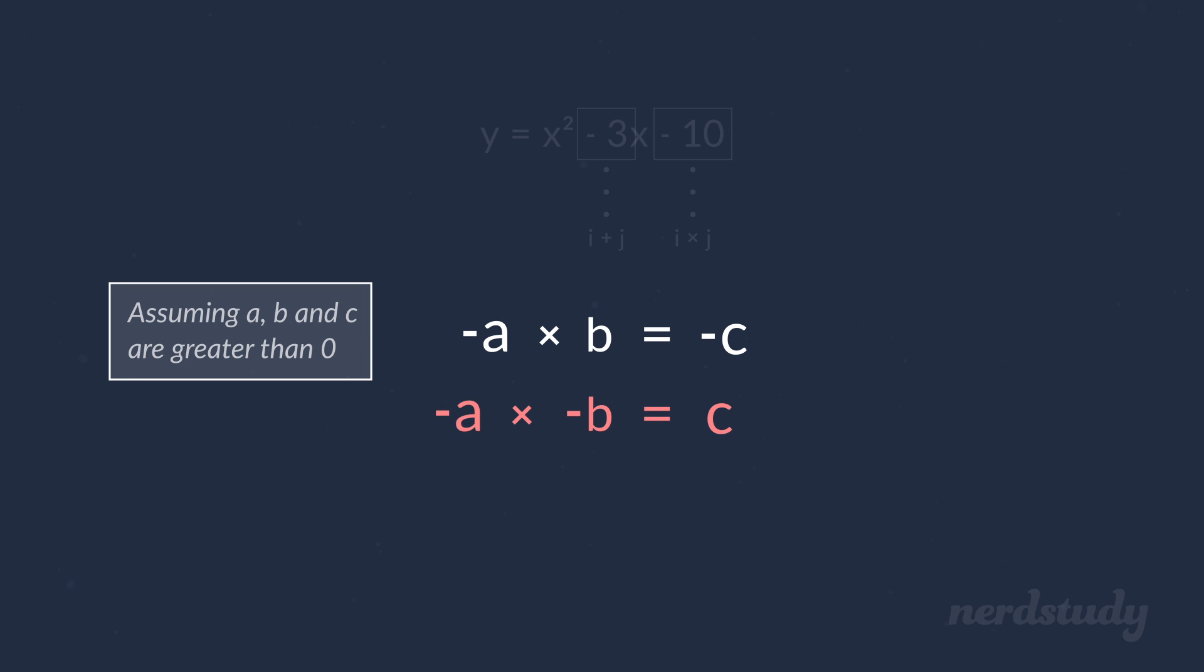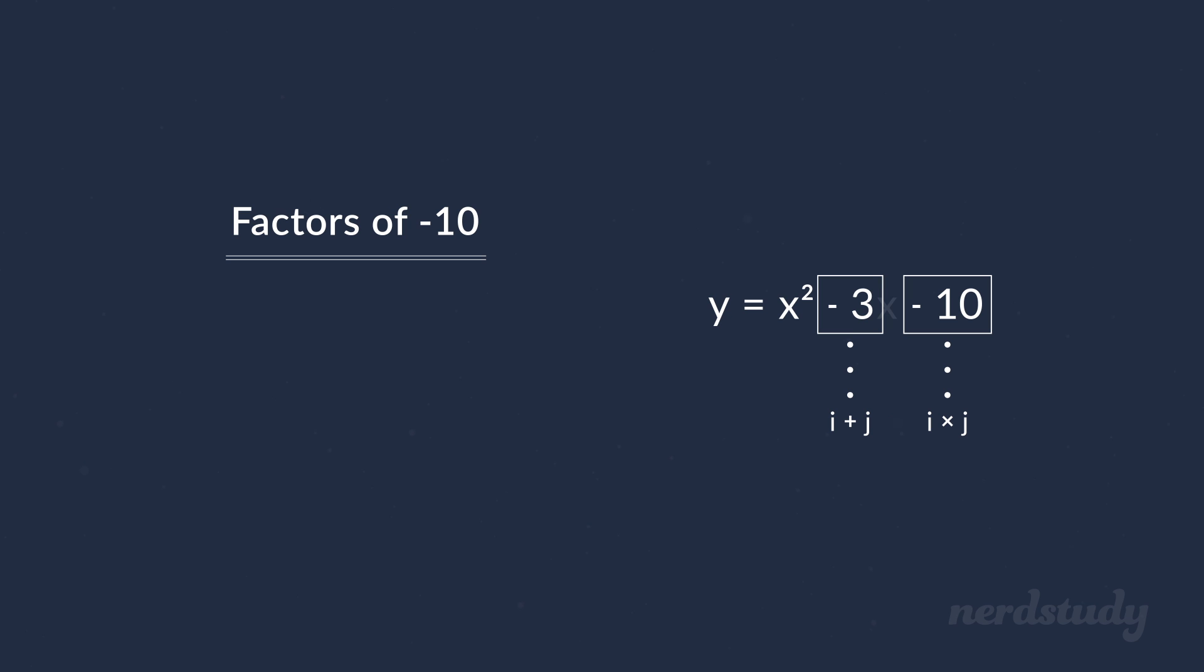Certainly not a negative number and a negative number, or a positive number and a positive number, since in both cases, we'd get a positive number. So, let's list out the possible factors of negative 10.